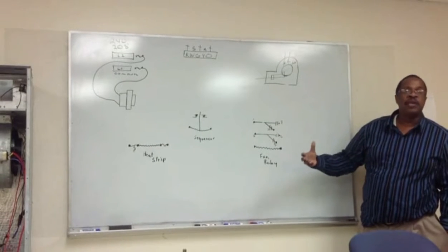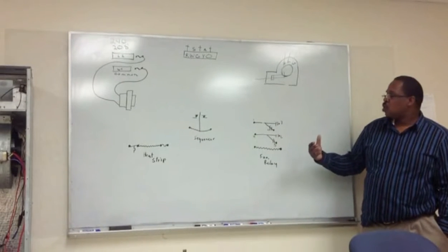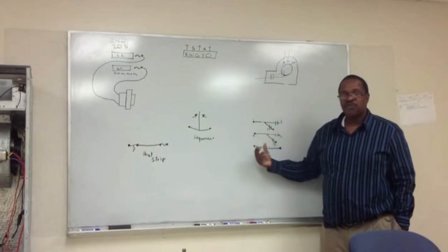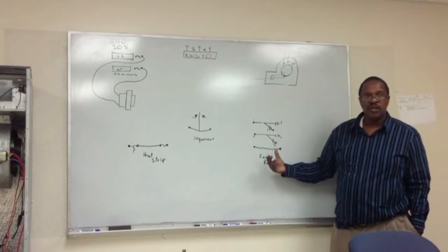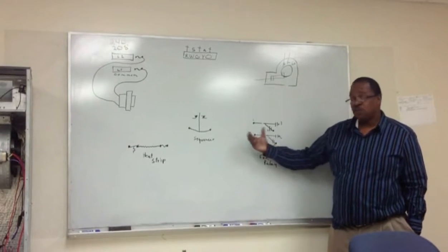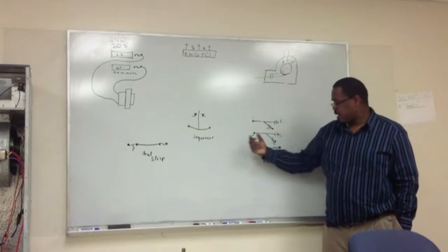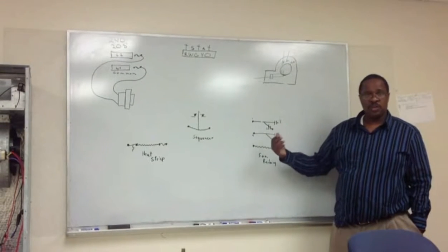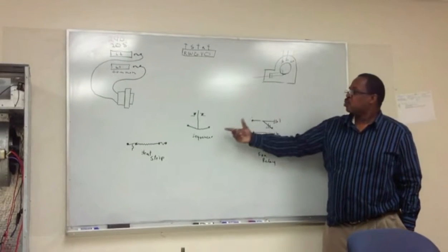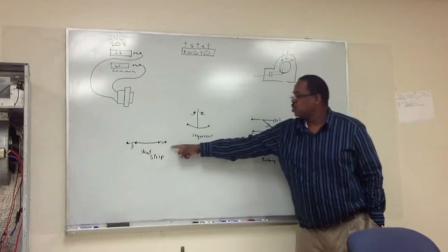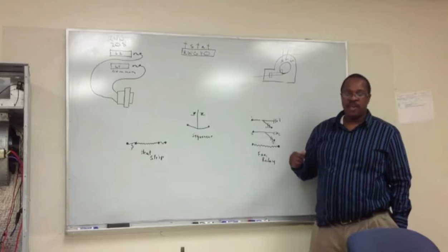So we call our fan relay and our sequencer low voltage controls in low voltage, or we call them our low voltage loads. But in high voltage, we call our sequencer and our fan relay switches. Yes? There are switches for our high voltage because they control high voltage loads. The heat strip and the fan.